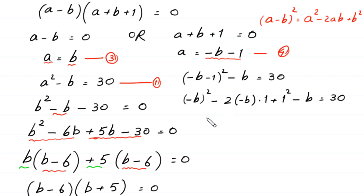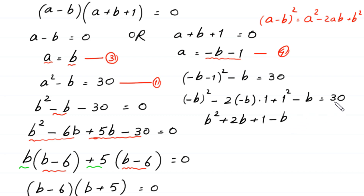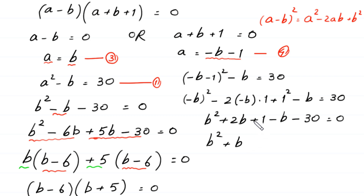Expanding fully: b² plus 2b plus 1 minus b equals 30. Simplifying: b² plus b plus 1 minus 30 equals 0, which gives b² plus b minus 29 equals 0.